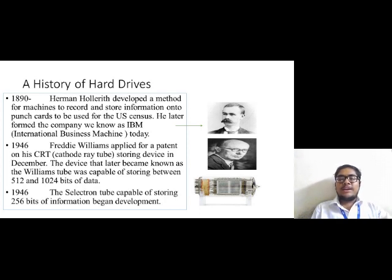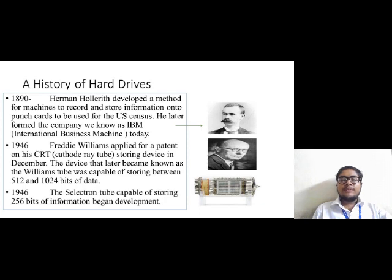Then in the year 1946, a patent for a CRT, that is cathode ray tube, storing device was applied by Freddie William. This device later became known as the Williams tube. The speciality of this tube was that it had a data storing capacity of 512 to 1024 bits of information. In the same year 1946, a tube capable of storing only 256 bits of data, known as the Selectron tube, also started development.